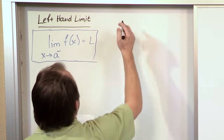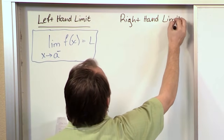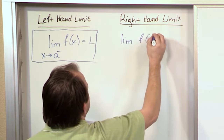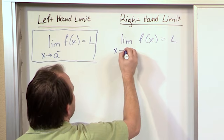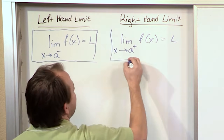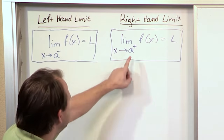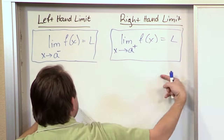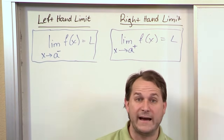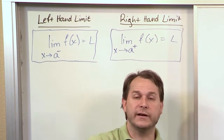A right-hand limit is very similar — basically the same sort of thing, but you're walking from the other side. You might have the limit of f of x equal to some limit L, with x approaching A. But now I'm walking from the right-hand side, so I put a little plus sign there. If you ever see a little plus or minus sign, it's telling you which way you walk. Plus means you're on the right-hand side walking toward the value; negative means walking from the left.